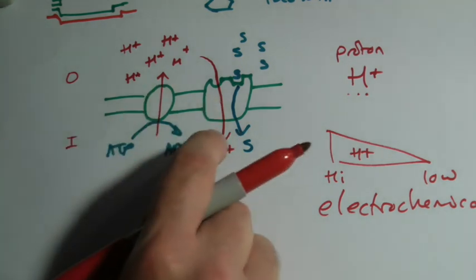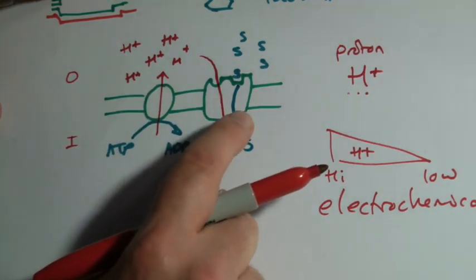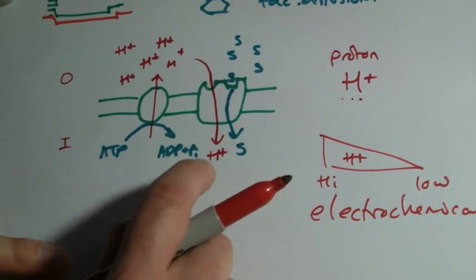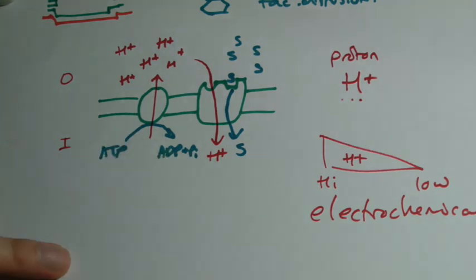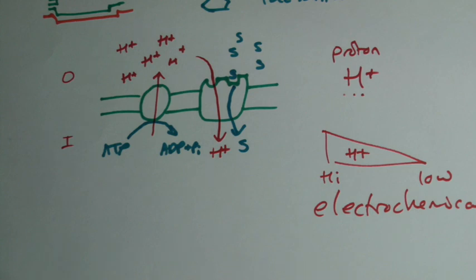But in co-transport, as that comes back through, we also bring through sucrose at the same time. And using this method we can pump, we can take sucrose from the outside, from that cell wall where it is, and into the cells. And this can be done in the companion cells, it can also be done at the sieve tube. So that's the bit maybe that's a little bit tricky.